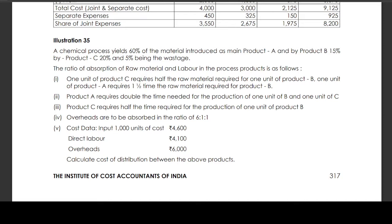One unit of product C requires half the raw material required for one unit of product B. One unit of product A requires one and a half times the raw material required for product B. Product A requires double the time needed for the production of one unit of B and one unit of C. Product C requires half the time required for the production of one unit of product B. Overheads are to be absorbed in the ratio of 6:1:1.